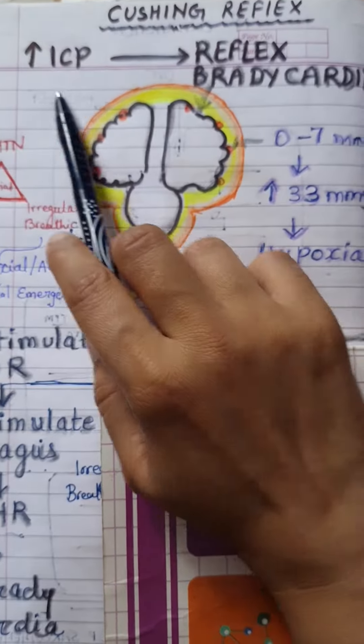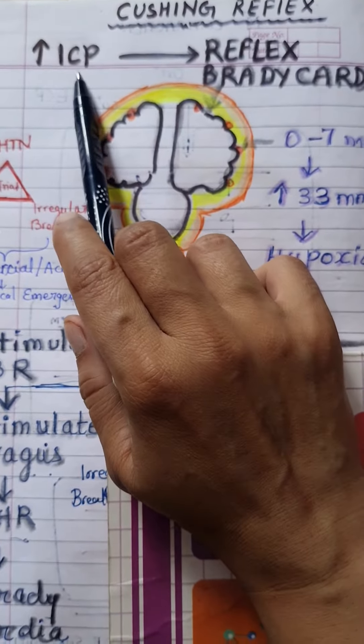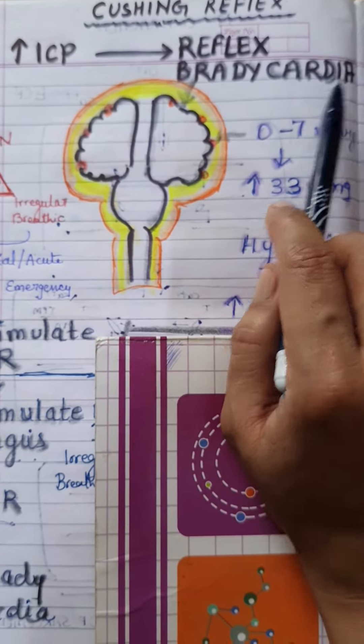Cushing reflex. Cushing reflex means increased intracranial pressure is associated with reflex bradycardia.